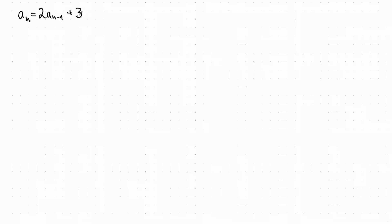Hello. In this video we will see how we can find an iterative formula for a recursive law by diagonalizing a matrix. We consider this recursive law: a_n is equal to 2·a_{n-1} plus 3·a_{n-2}, and we start with a_2 and a_1 equal to 1.